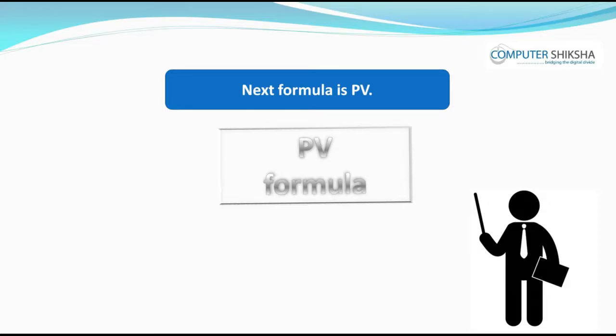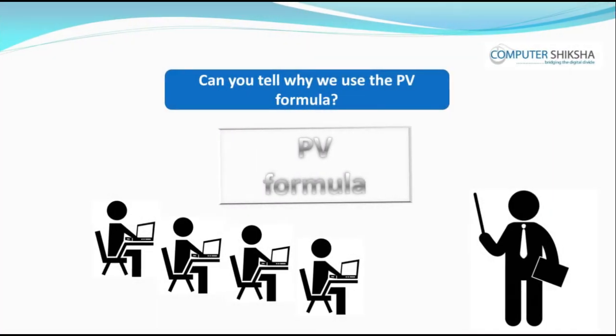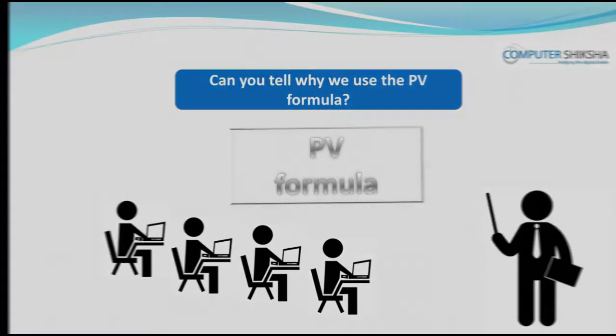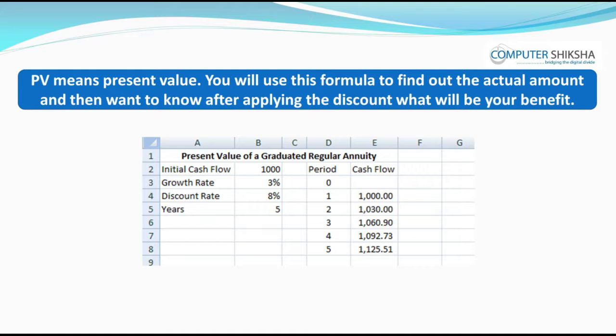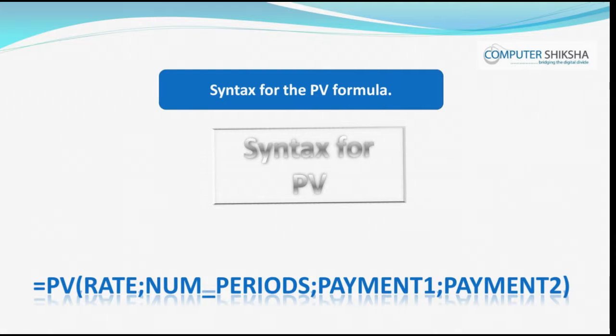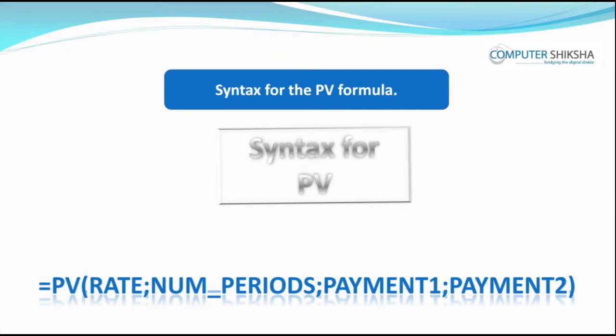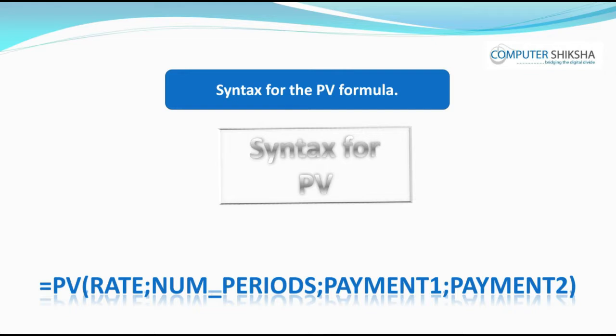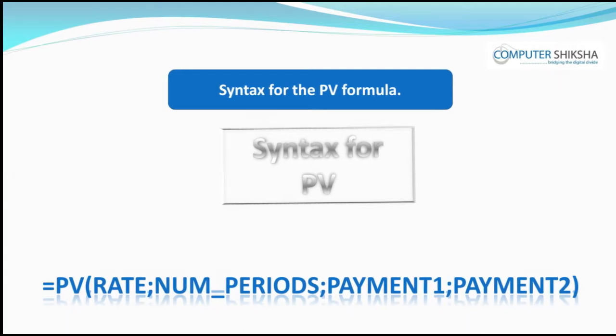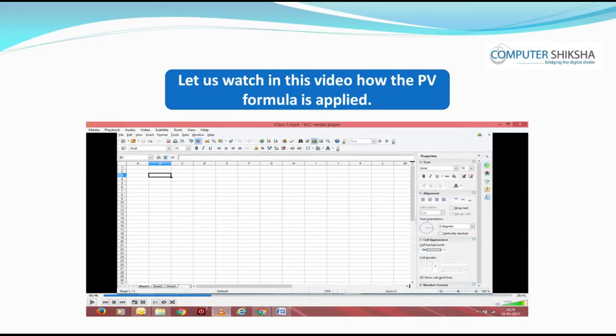The next formula is for PV. Can you tell why we use the PV formula? PV means present value. You will use this formula to find out the actual amount — for instance, after applying a discount, what will be your benefit. The syntax is: =PV(rate; nper; payment1; payment2; ...). Let us watch the video to see how the PV formula is applied.